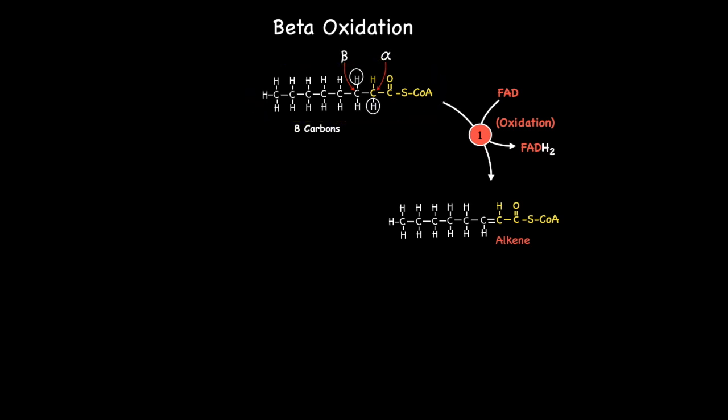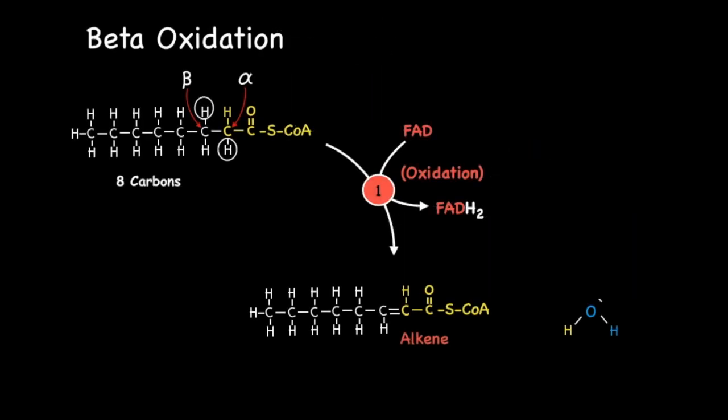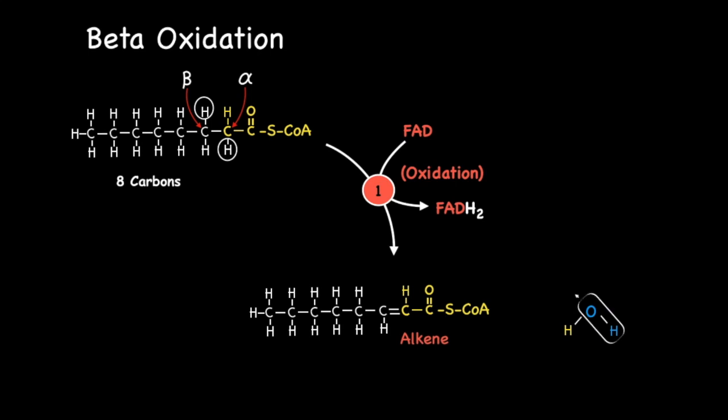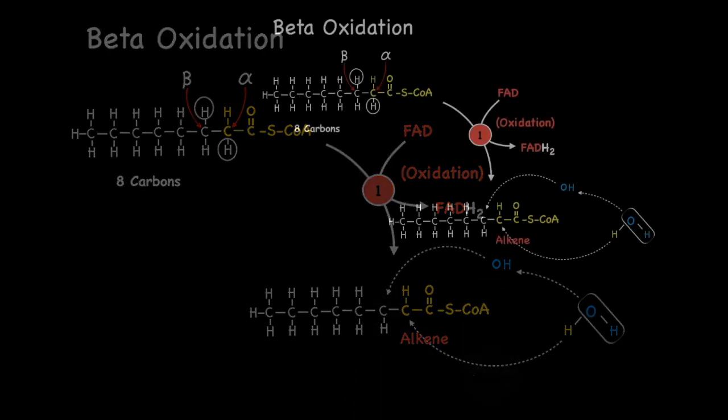The next step involves the addition of water across the newly formed double bond. The water molecule splits into an OH group which subsequently attaches to the beta carbon while the remaining hydrogen atom attaches to the alpha carbon. This whole process results in the removal of the double bond resulting in the production of a secondary alcohol.